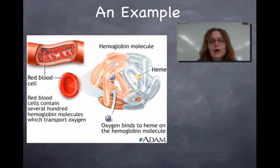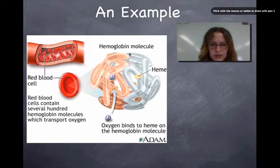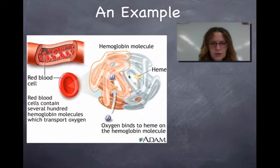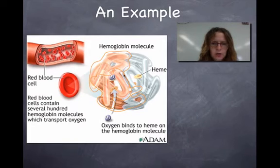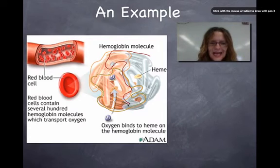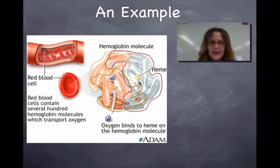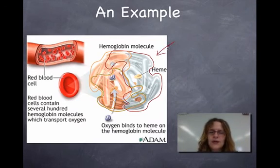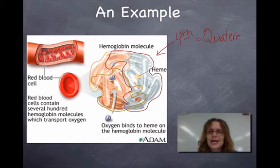Here's an example of a quaternary protein — hemoglobin. There are three different protein chains: here's one protein chain, there's a second protein chain, and here is the third protein chain. So in a hemoglobin molecule, three individual polypeptides all form a protein at the quaternary level, the fourth level. Quaternary equals four, and hemoglobin is an example of a protein that has quaternary level structure.